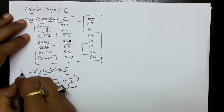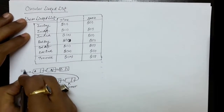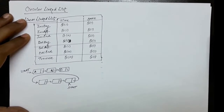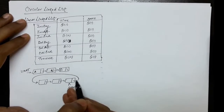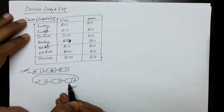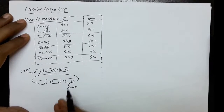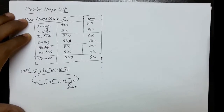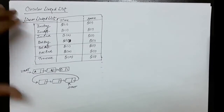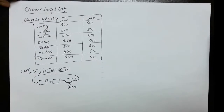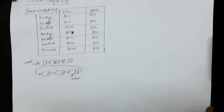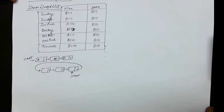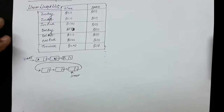In the linear linked list, start was at the first node. Now in the circular linked list, start is at the last node. So let us try to write some of the algorithms related to the circular linked list.